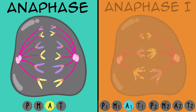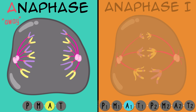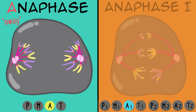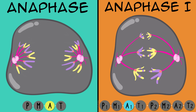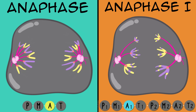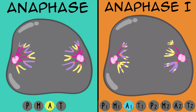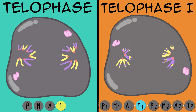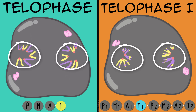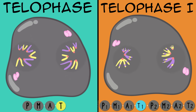Anaphase in mitosis—I like to think of the A for away: the chromatids are pulled away by the work of the spindles, moving to opposite sides of the cell. Anaphase 1 in meiosis is the same thing, but in this case it's the chromosomes—not chromatids—being pulled away to opposite sides of the cell. Telophase in mitosis and telophase 1 in meiosis: the chromosomes are at the complete opposite ends and new nuclei are forming on each side, starting to surround the chromosomes as this will eventually form two cells.